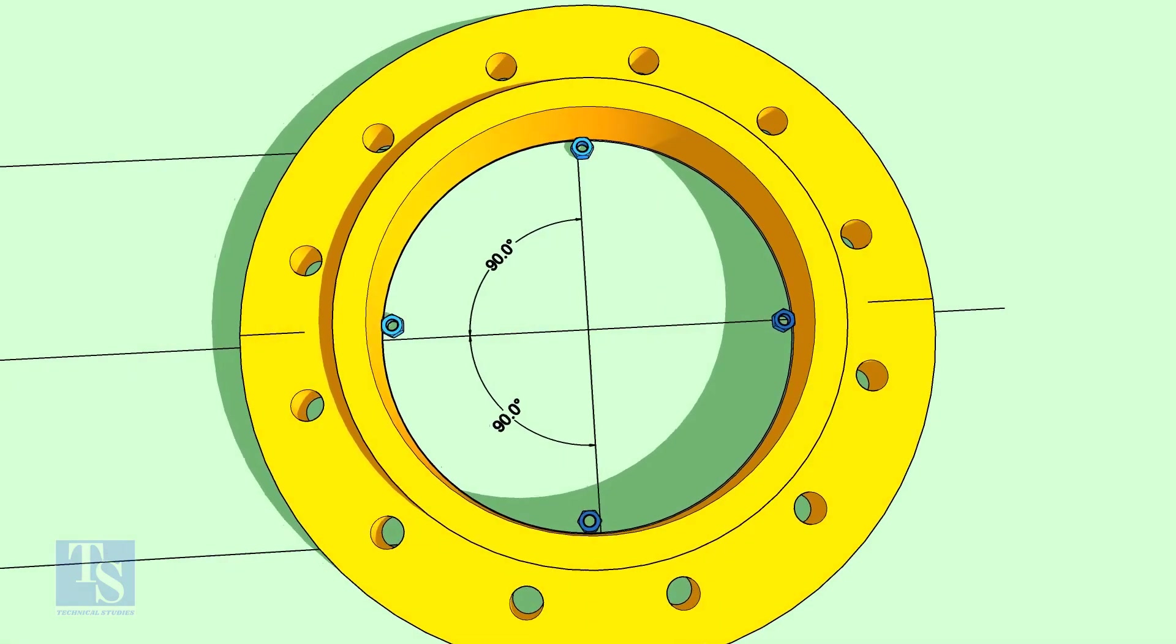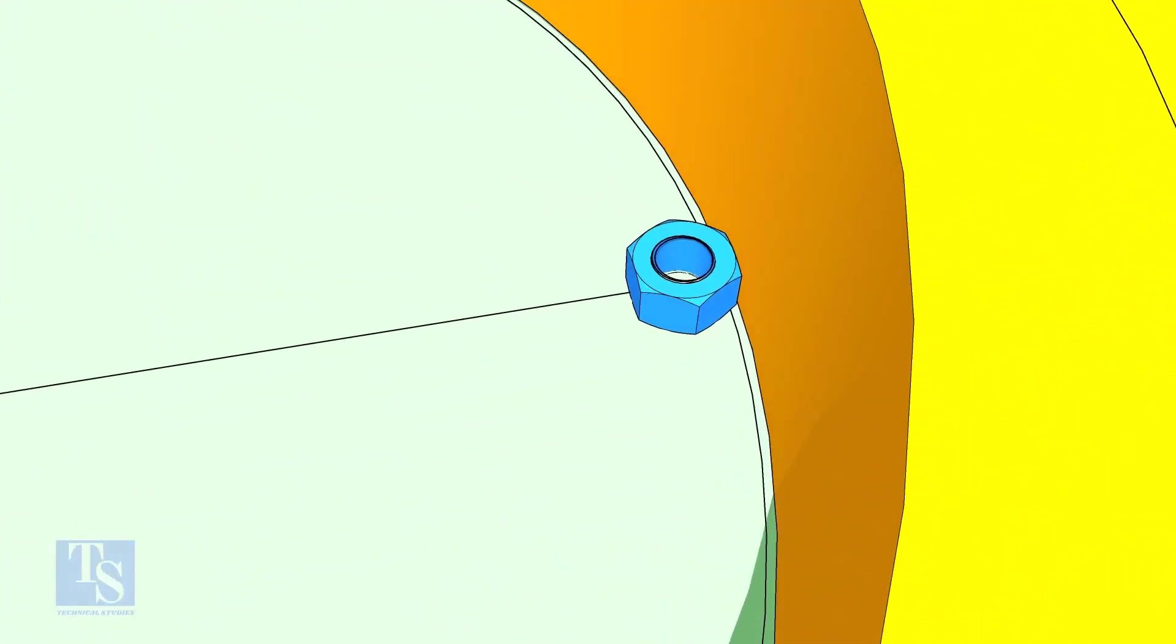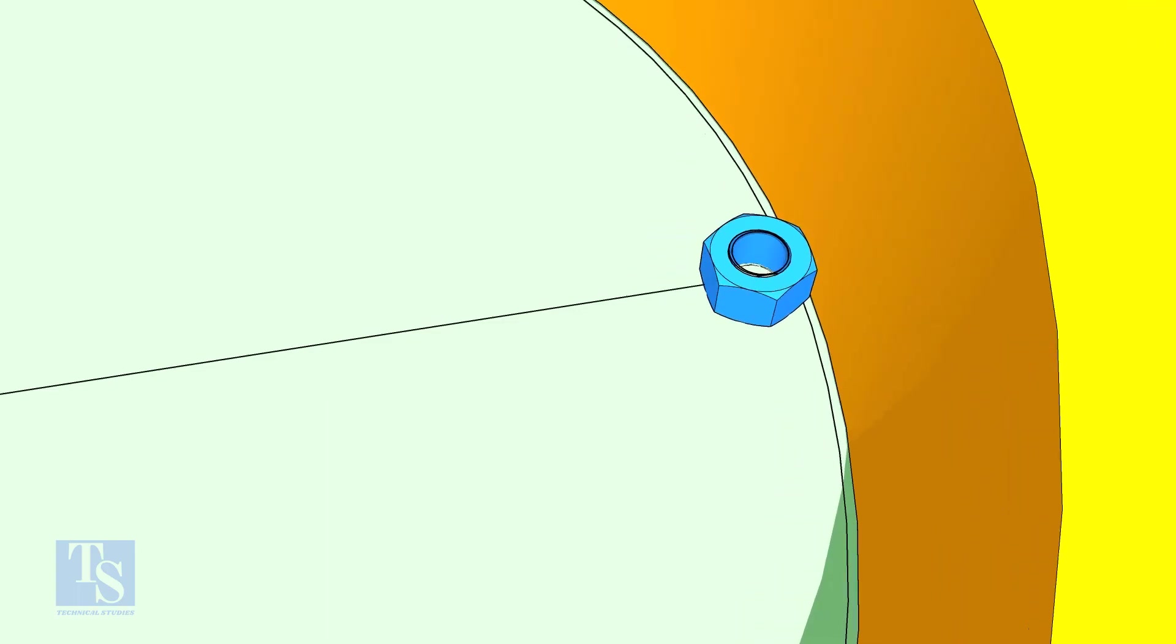Put four nuts in the flange as shown. The thickness of the nut shall be equal to the thickness of the elbow, or as per the weld size given in the drawing.